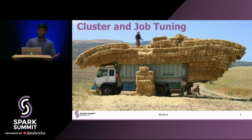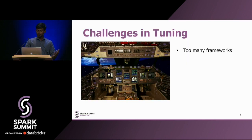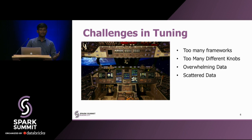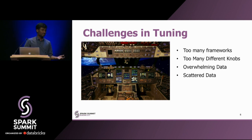Tuning jobs has its own challenges. Today we have too many different frameworks — Pig, Hive, and Spark. Each one of these frameworks has a bunch of configuration parameters that you can set. Changing one configuration can affect the outcome of another. There's an overwhelming amount of data — so much logs, and everything is scattered everywhere. Tuning a Hadoop or Spark job is not a trivial task, and it's definitely not easy even for experts to quickly identify the problem. It is time-consuming and an unproductive dev effort.